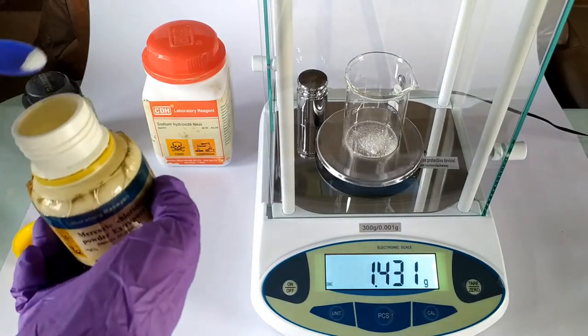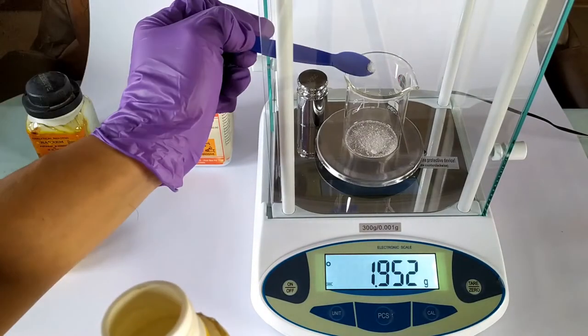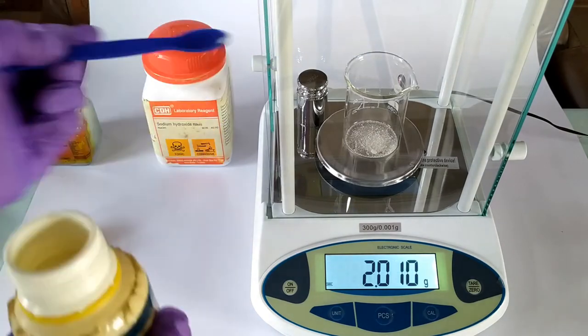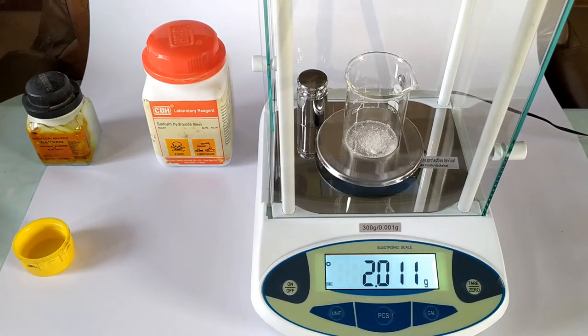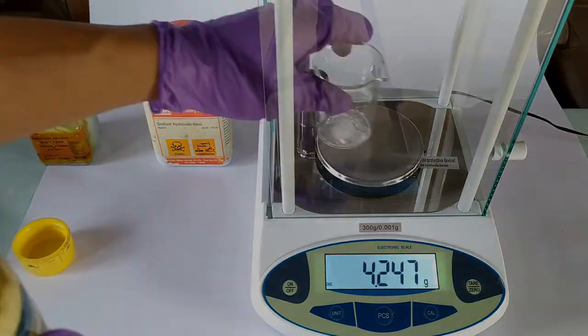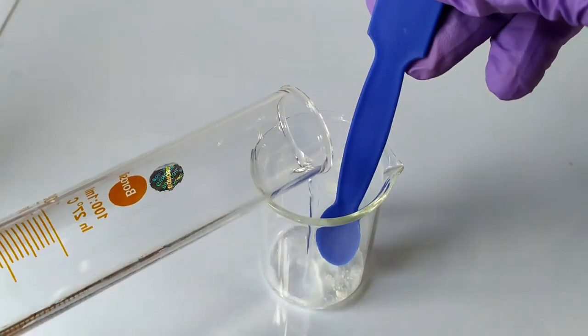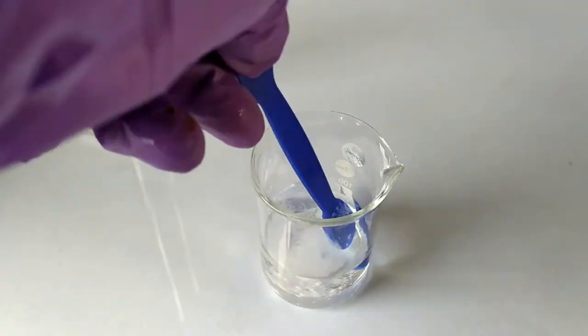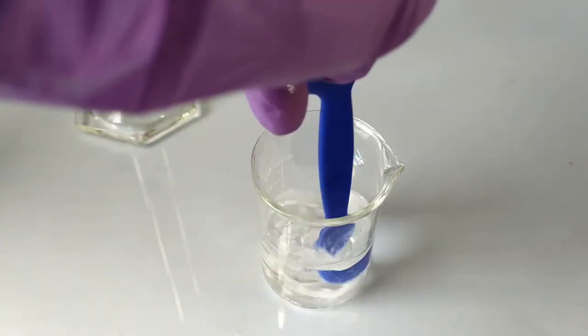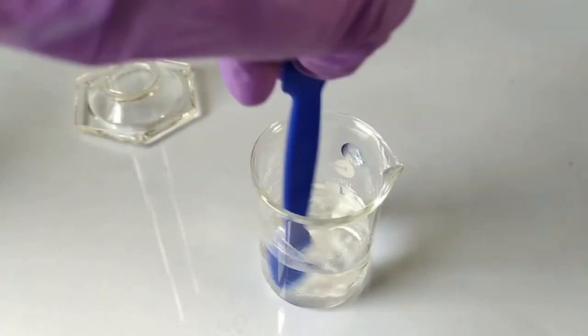Now weigh about 2 grams of mercury chloride using the second beaker. Add to this about 40 to 50 ml of water and continuously stir the contents until the mercury salt is completely dissolved. This might take some time. Also keep this beaker aside.